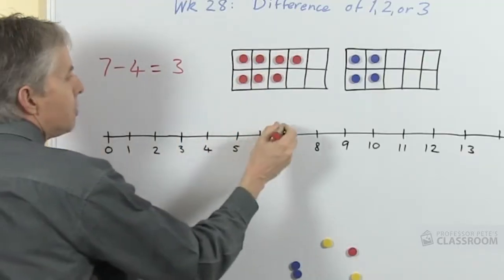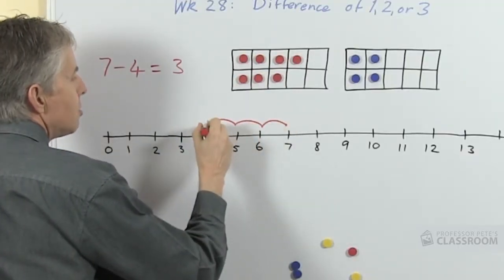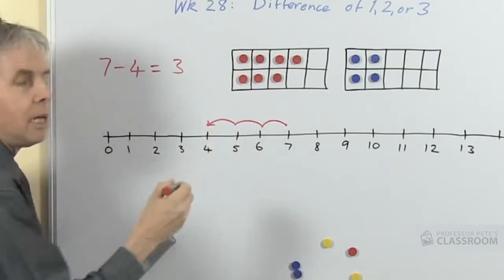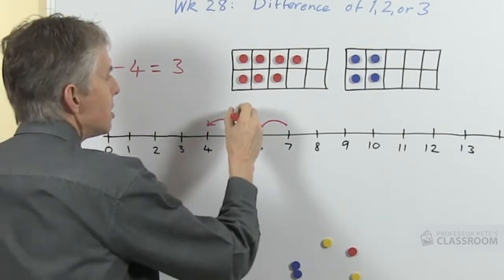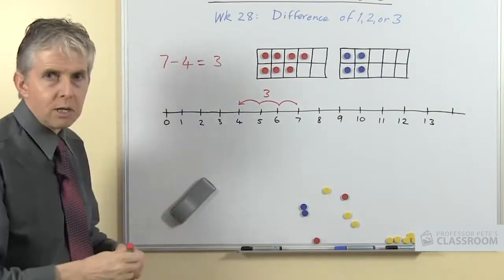So if we start from the 7 and count back until we get to the 4, there's the 4. How many hops did we do backwards? The answer is 3, so this must be the answer to our question.